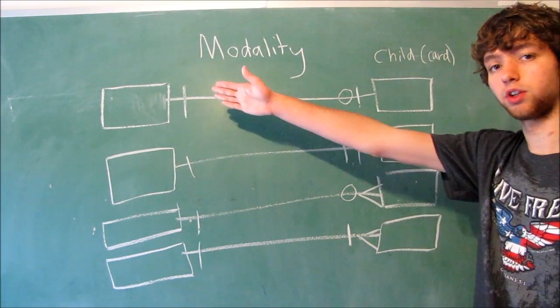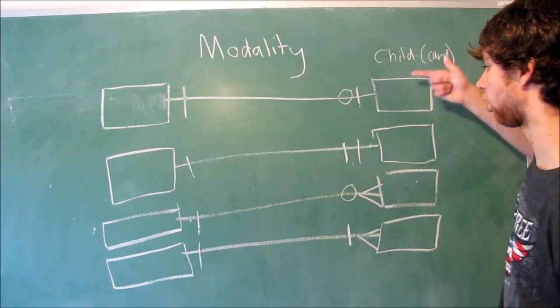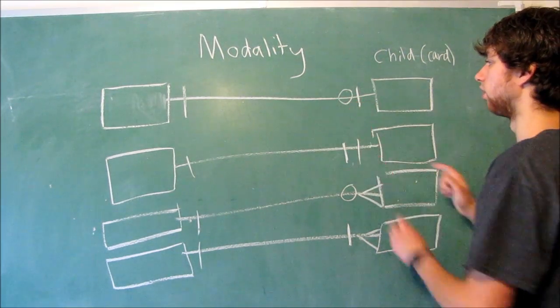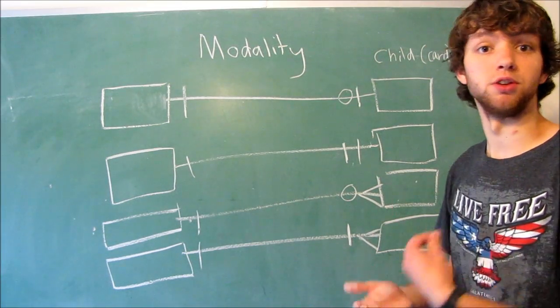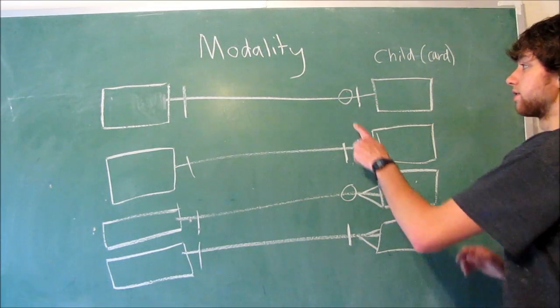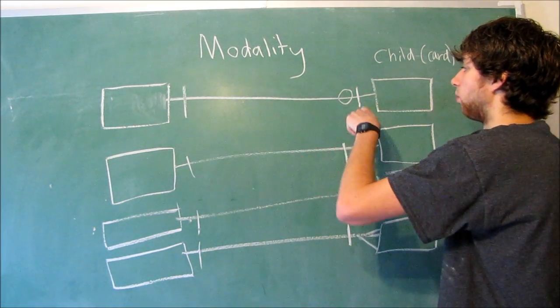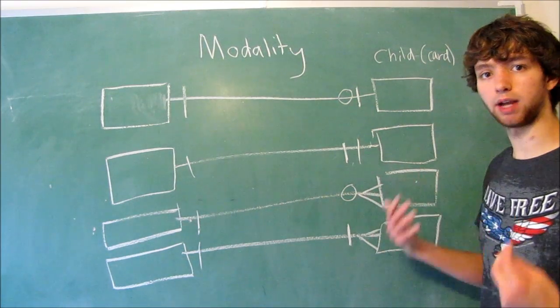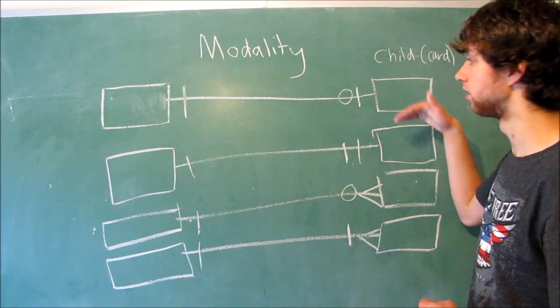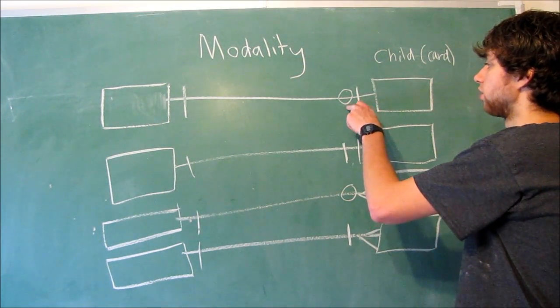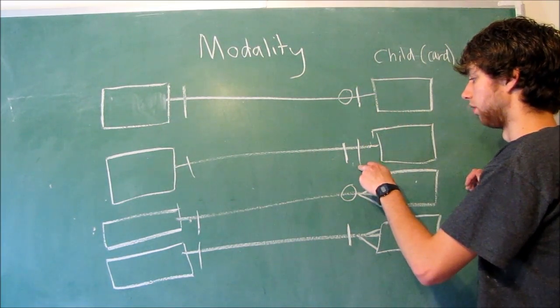So over here we have the card holder. One card holder for all of these examples. And then over here we have the card. A zero means the column does not have the not null characteristic, meaning it accepts no value. So this is saying it can accept no value. So we have a one to one relationship. That's the maximum. The card holder can have up to one card, but it's not required.